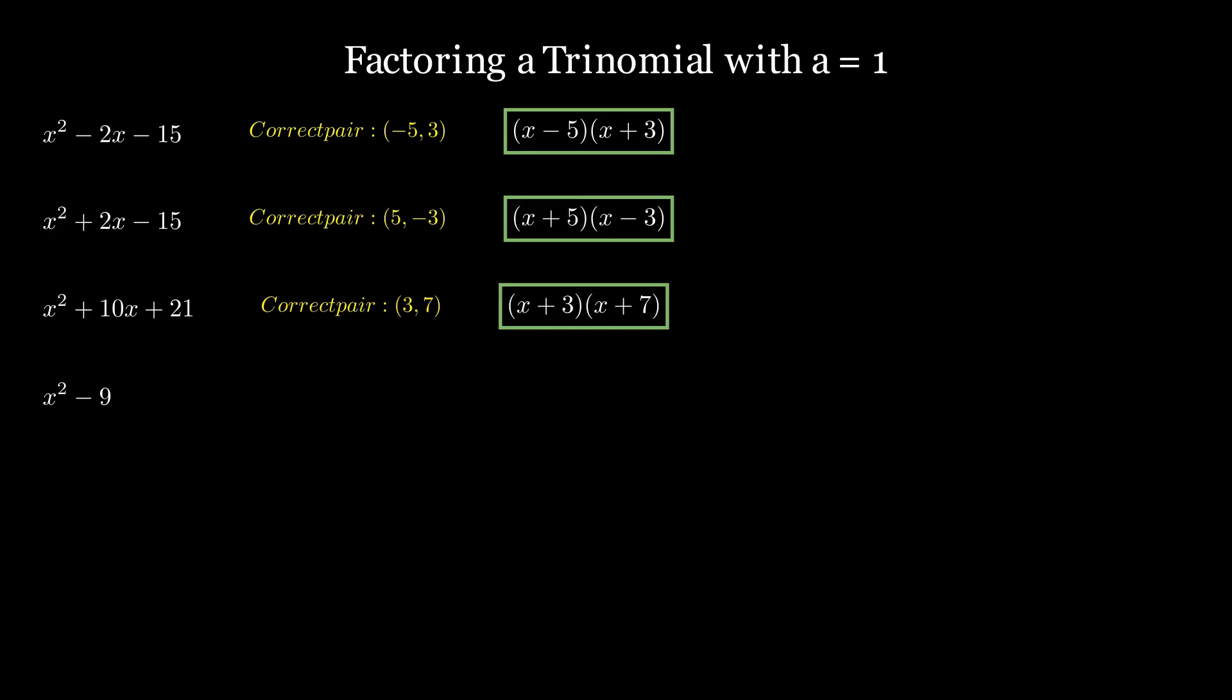Finally, consider x squared minus 9. This one is a difference of squares. The correct pair is negative 3 and plus 3, which gives x minus 3 times x plus 3. And those are four quick examples of factoring trinomials when a equals 1.